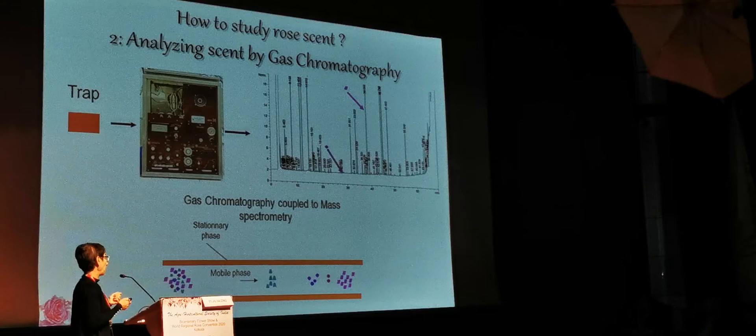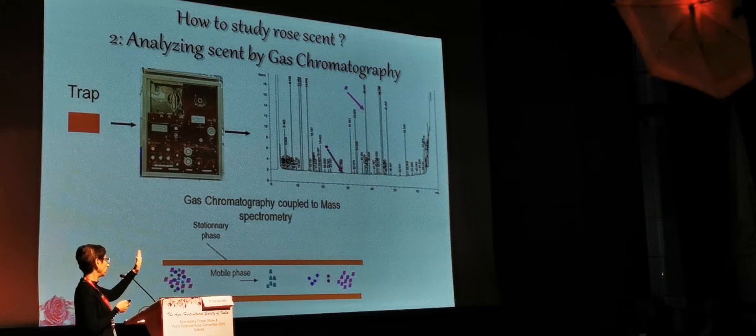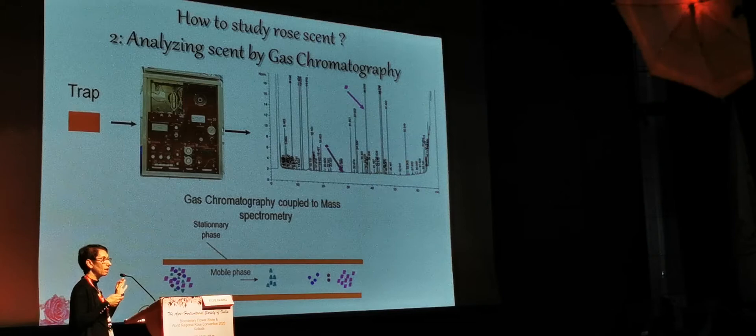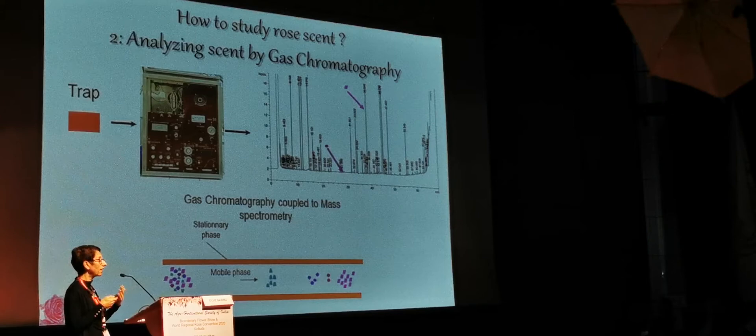You can have compounds present in large quantities, but you can also have compounds present in very small quantities. And although present in very small quantities, our nose may still be able to smell them. So there is another layer of complexity — it is not because a compound is not very abundant that we don't smell it. This makes it complicated to study.